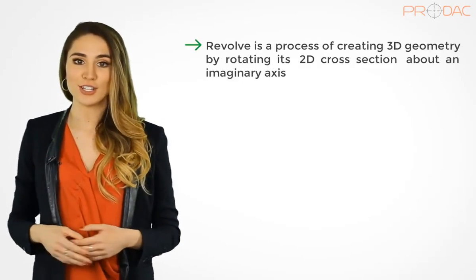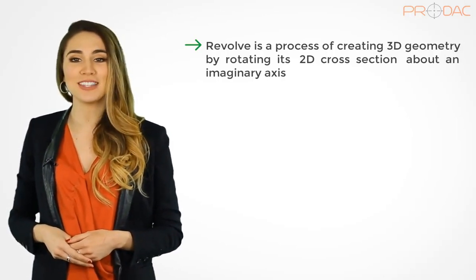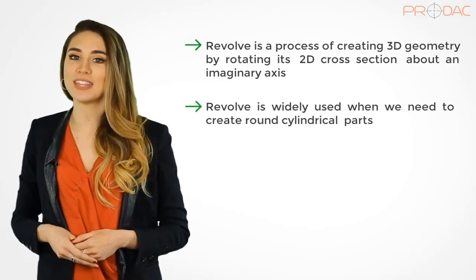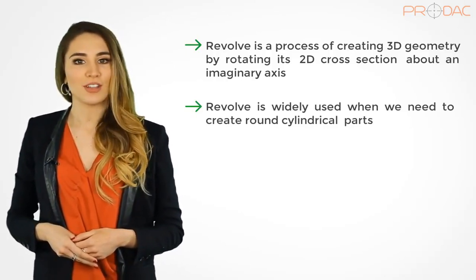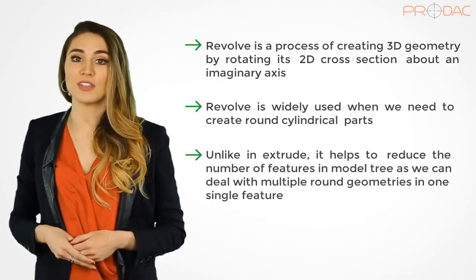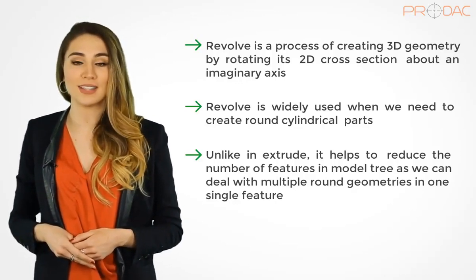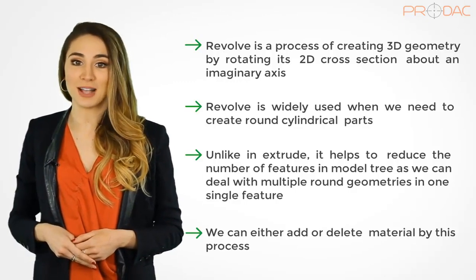Let us take some time to define the Revolve process in four easy points. First, Revolve is a process of creating 3D geometry by rotating its 2D cross-section about an imaginary axis. Second, Revolve is widely used when we need to create round cylindrical parts. Third, unlike in extrude, it helps to reduce the number of features in the model tree as we can deal with multiple round geometries in one single feature. Fourth, we can either add or delete material by this process.